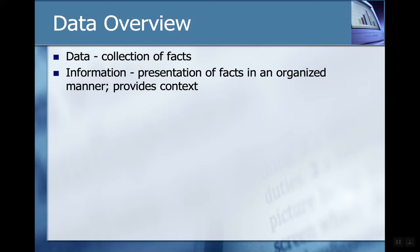From a human perspective, what we really focus on is information. Data is kind of raw, whereas information is processed — it's a presentation of facts in an organized fashion.